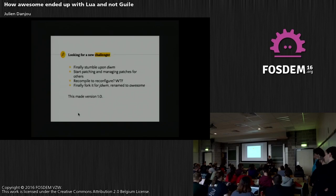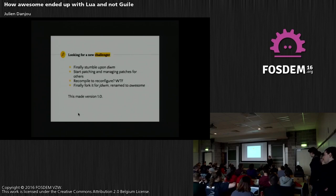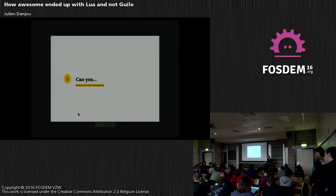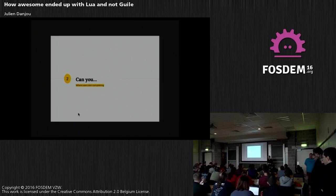So I started to grab all the patches I thought were interesting and build a new window manager, which I called JDWM, renamed to Awesome for version one. I started to have users because people were happy not to have to maintain their own patches anymore. People started to use Awesome because it was like DWM but better — with more features and a configuration file, which is very handy when you want to change things without recompiling. It was packaged in Debian, easier to use than DWM.